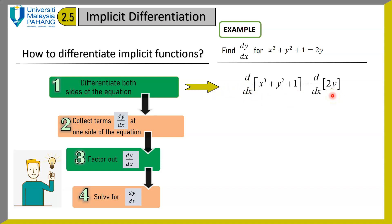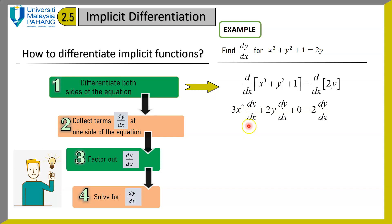On the left hand side you will have 3x squared — the dx/dx term is optional since it gives you 1 — plus 2y dy/dx. Differentiating the constant gives 0. On the right hand side you have 2 dy/dx.